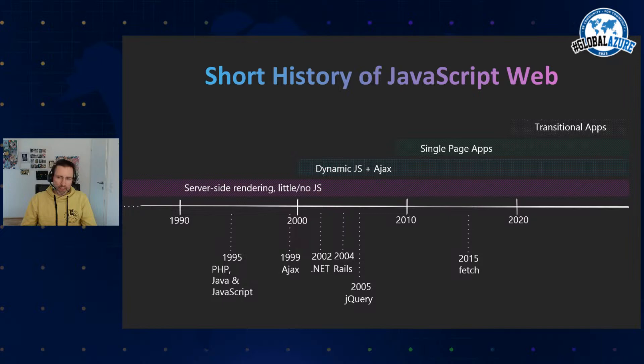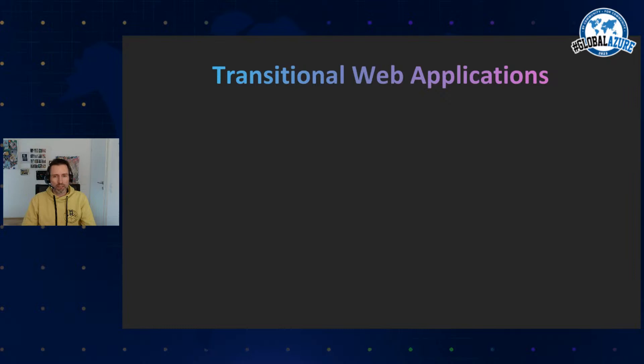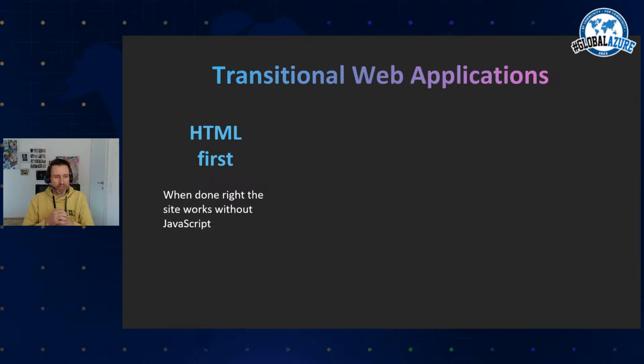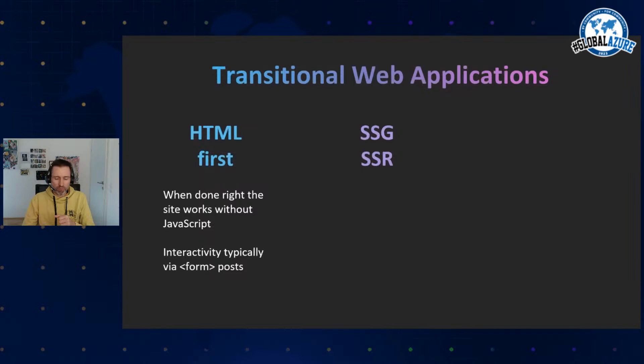Around 2020, transitional apps started. These are HTML-first — going back to the basics of HTML and CSS and nothing else. When done right, these pages work without any JavaScript: interactivity is done via links and form posts. But you can sprinkle in JavaScript on the client for more interaction. Server-side rendering or static site generation is used, and the frameworks automatically switch to single-page application mode once JavaScript kicks in.